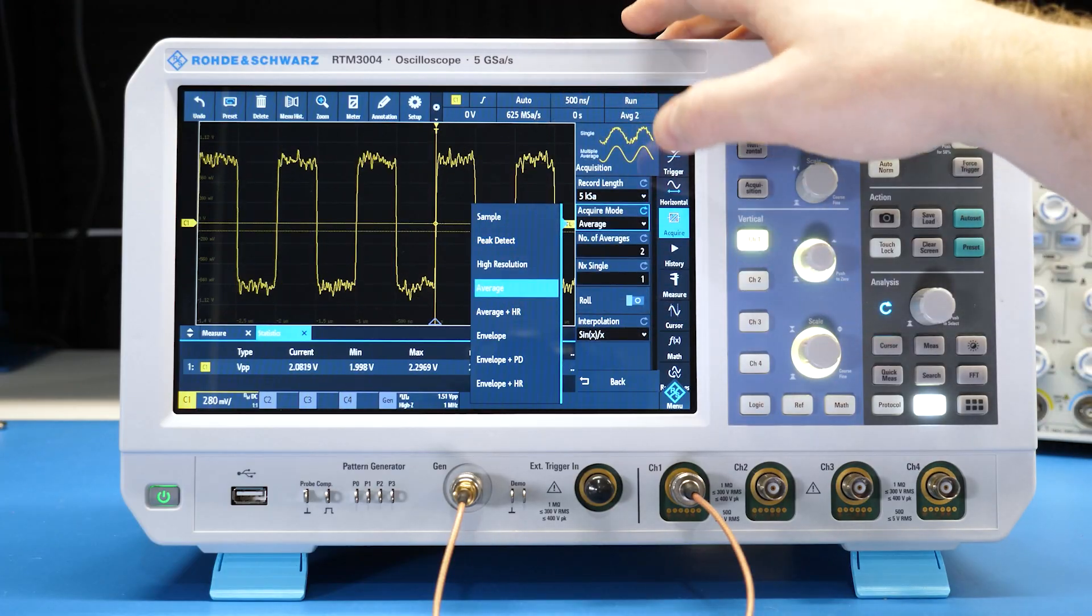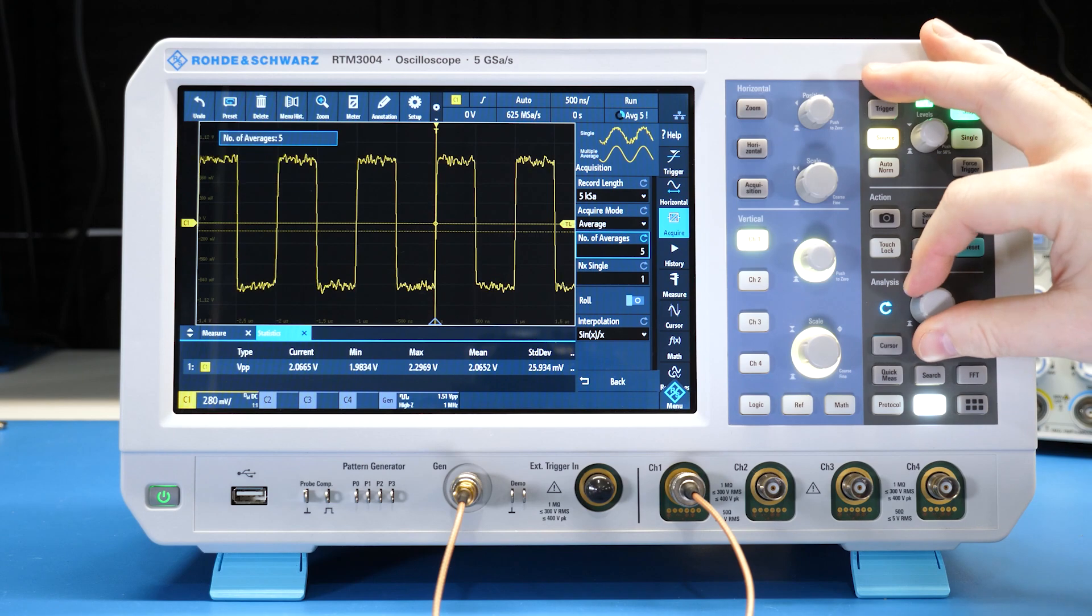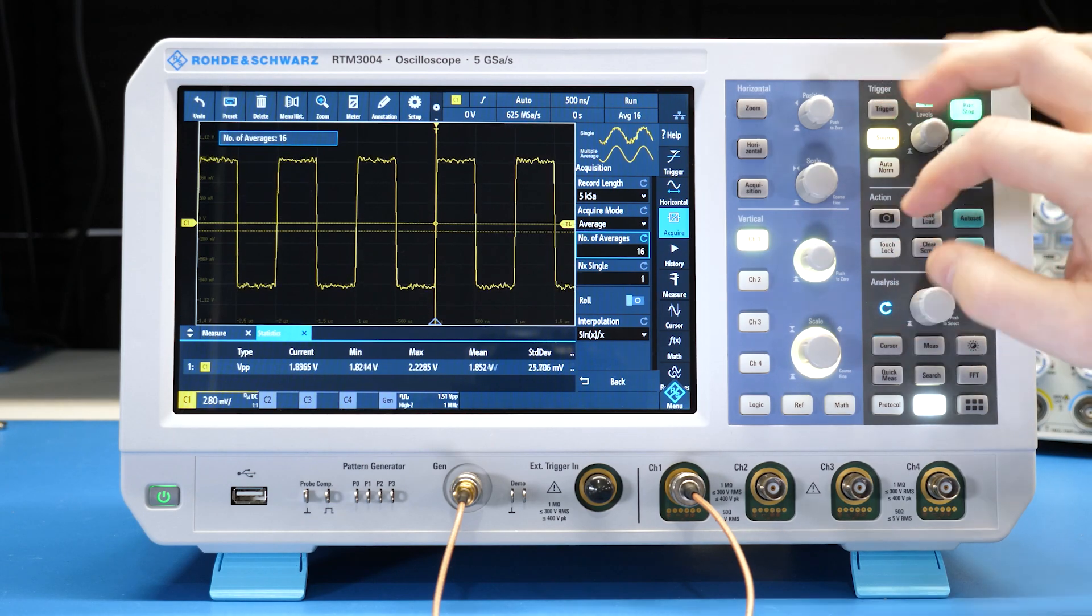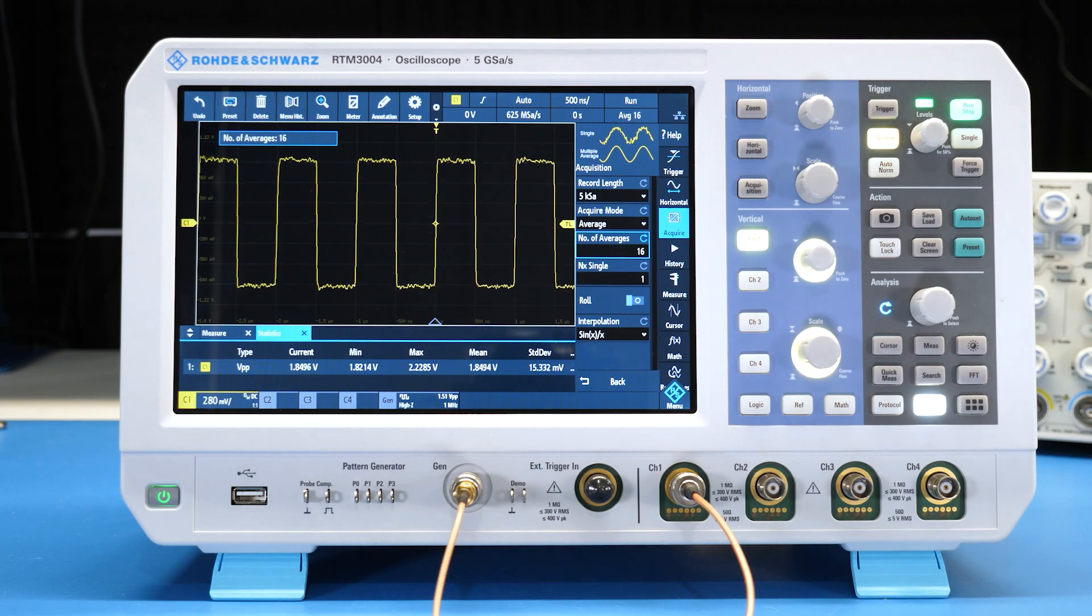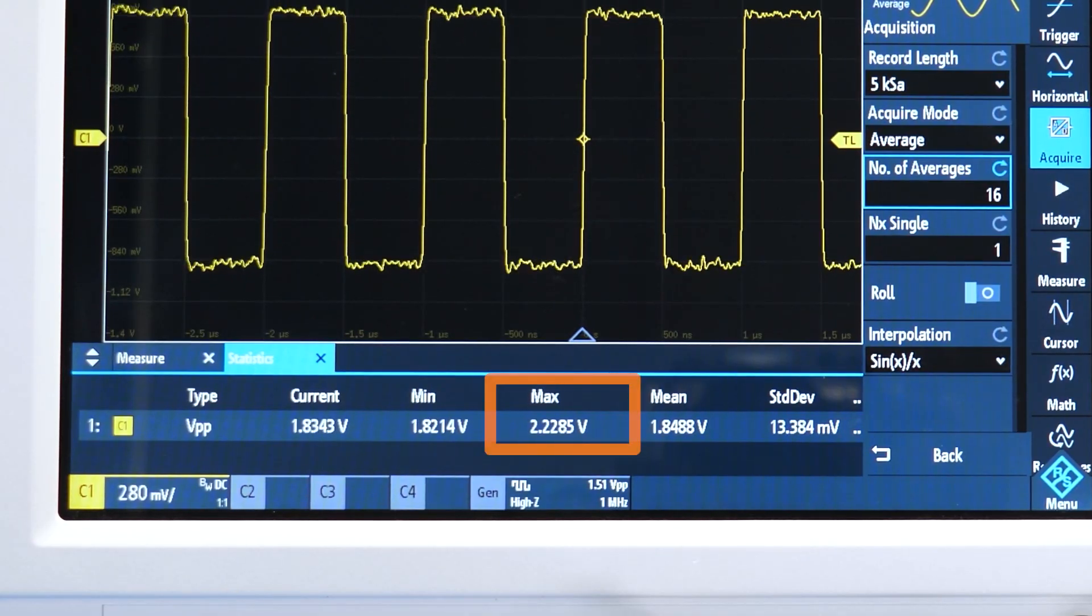Back to the noisy square wave, let's switch to average mode with 16 averages. Wow, all of the noise is gone, and our peak-to-peak looks great. Except, notice the max value.